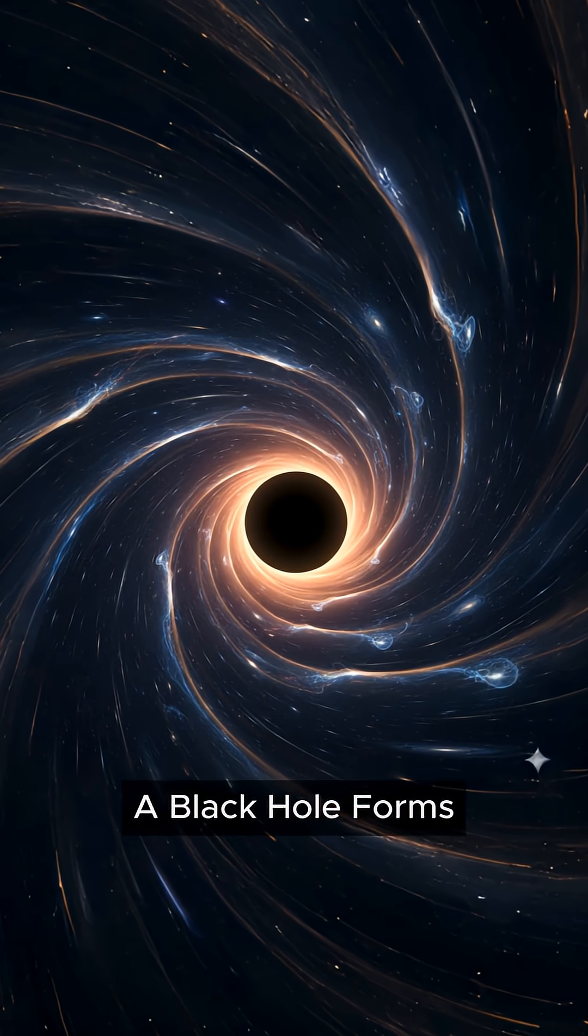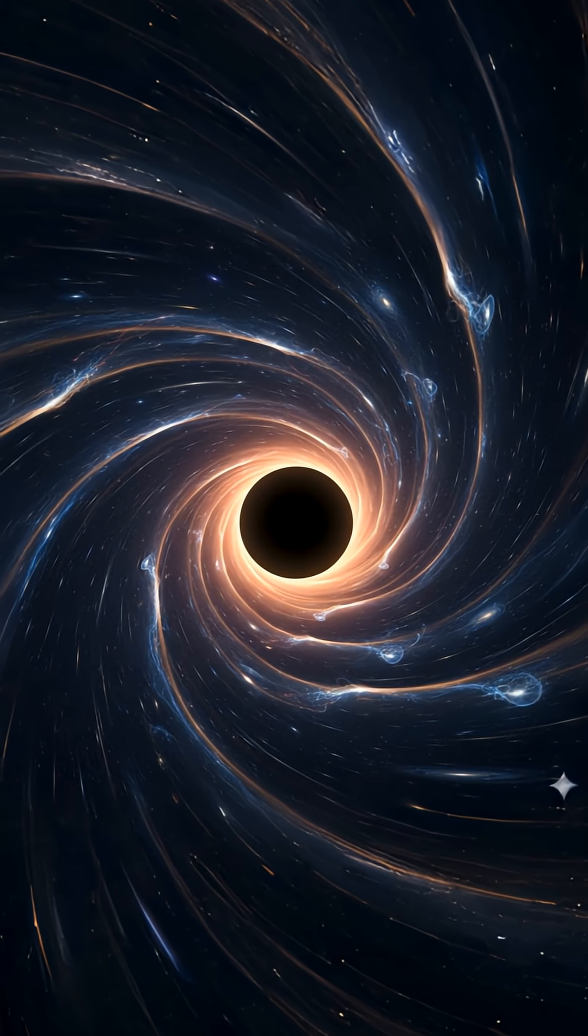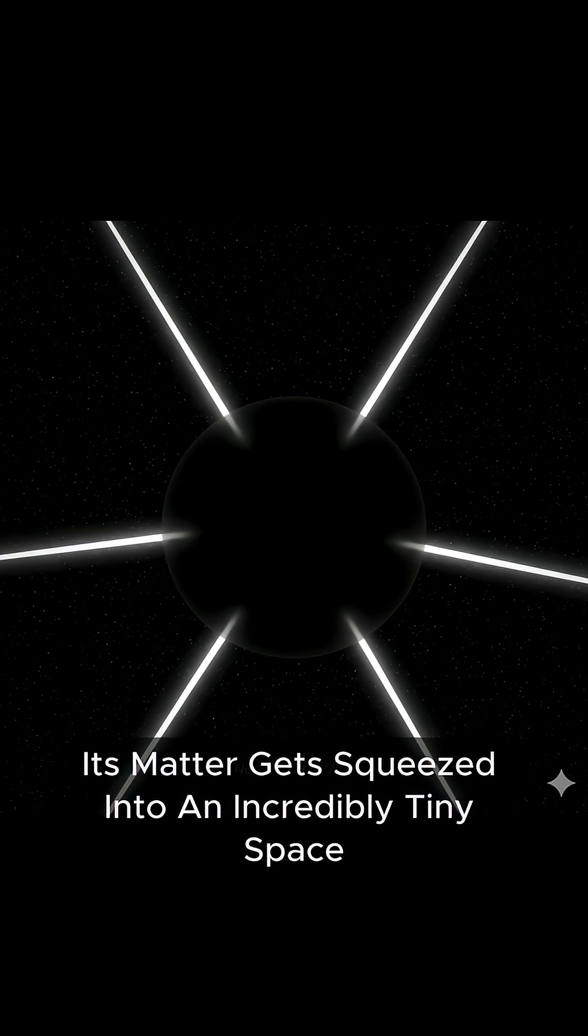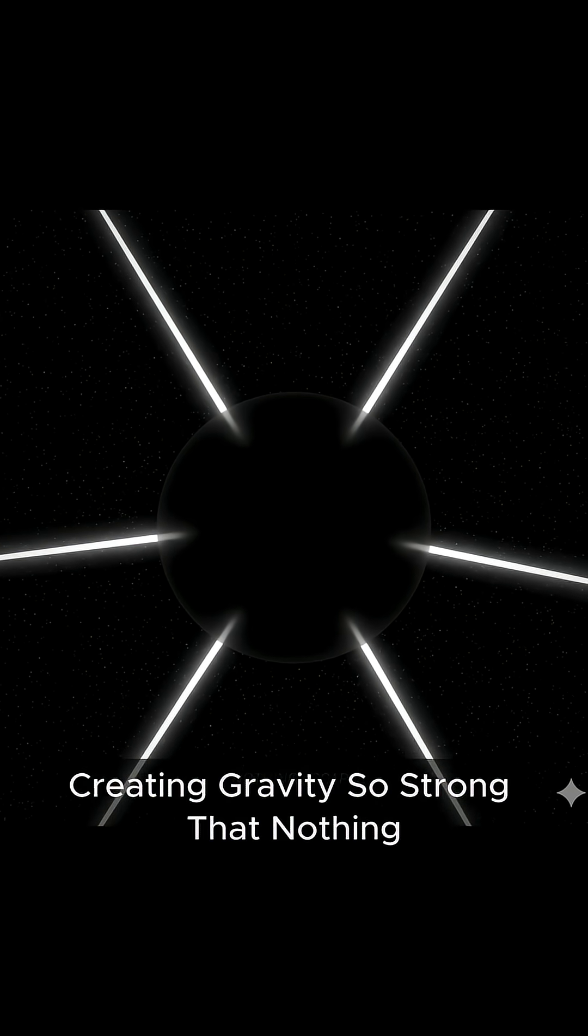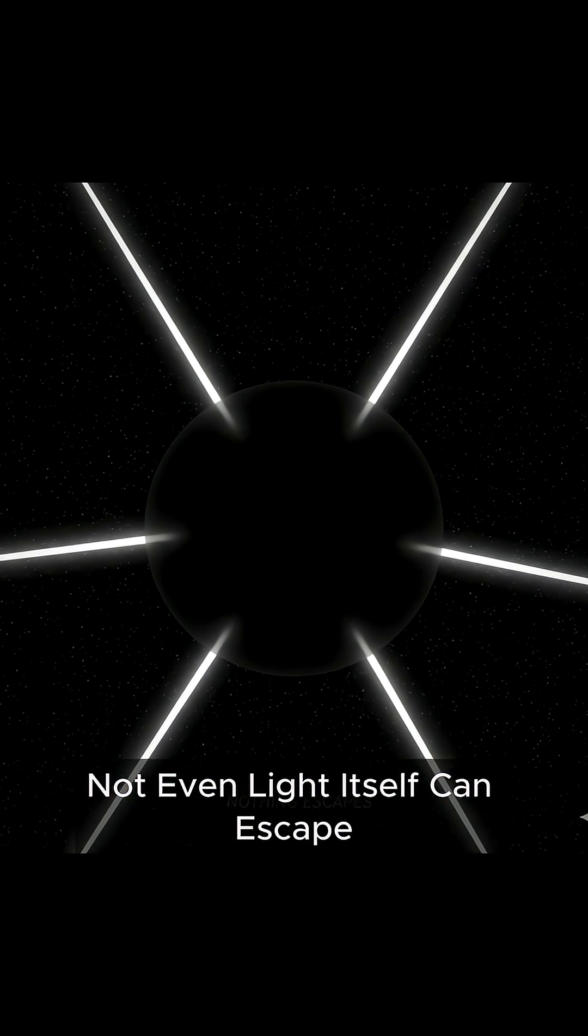A black hole forms when a massive star collapses under its own gravity after death. Its matter gets squeezed into an incredibly tiny space, creating gravity so strong that nothing, not even light itself, can escape.